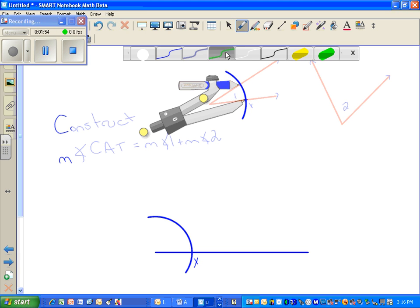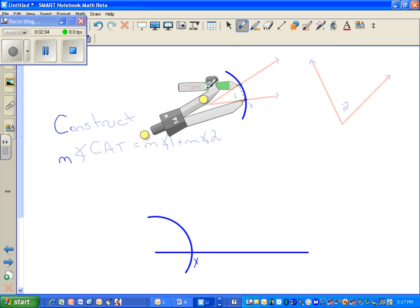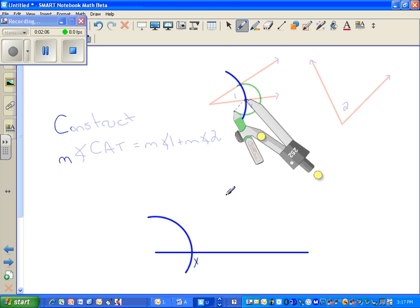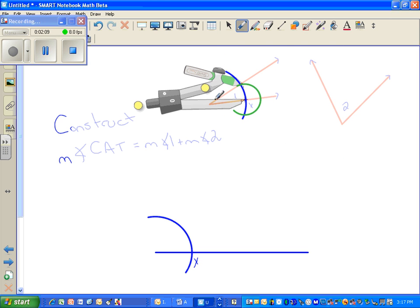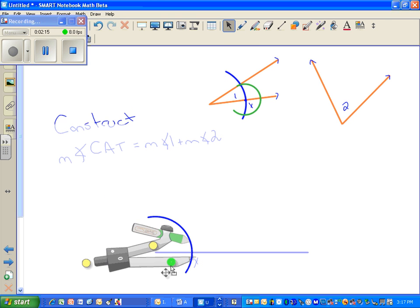And I'm going to go ahead and change colors so you can see that that's a different arc. Okay, so I've measured from the intersection from one ray in the arc to the second ray in the arc. I'm going to leave a little mark there. Now, I'm going to come down to my new X. I'm going to pivot on that X because it's the corresponding point to the original.